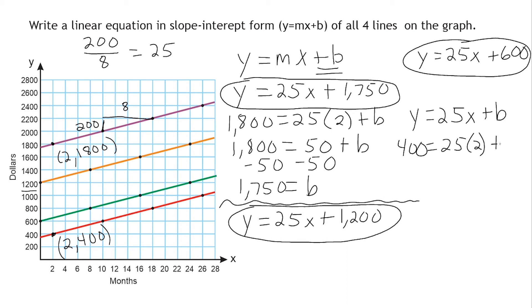And then we have to solve for b. So if we simplify this equation a bit more, we get 400 equals 50 plus b.